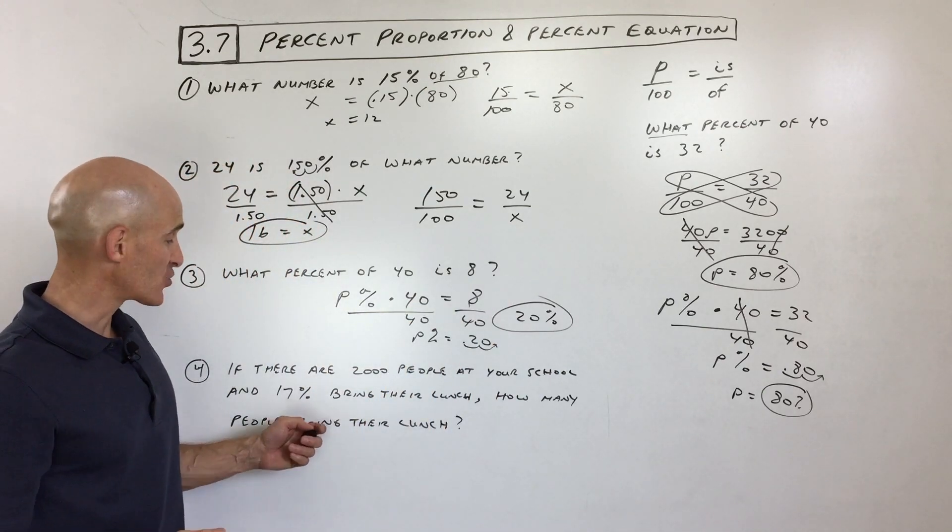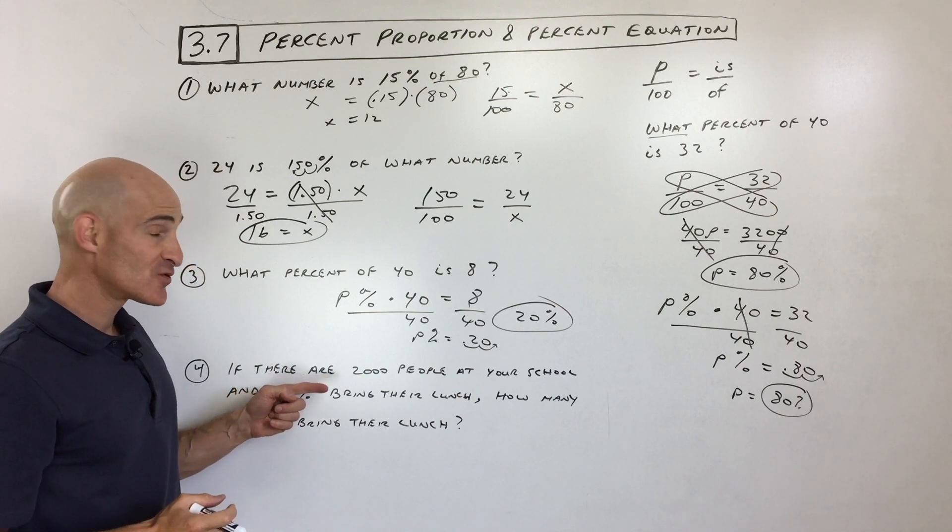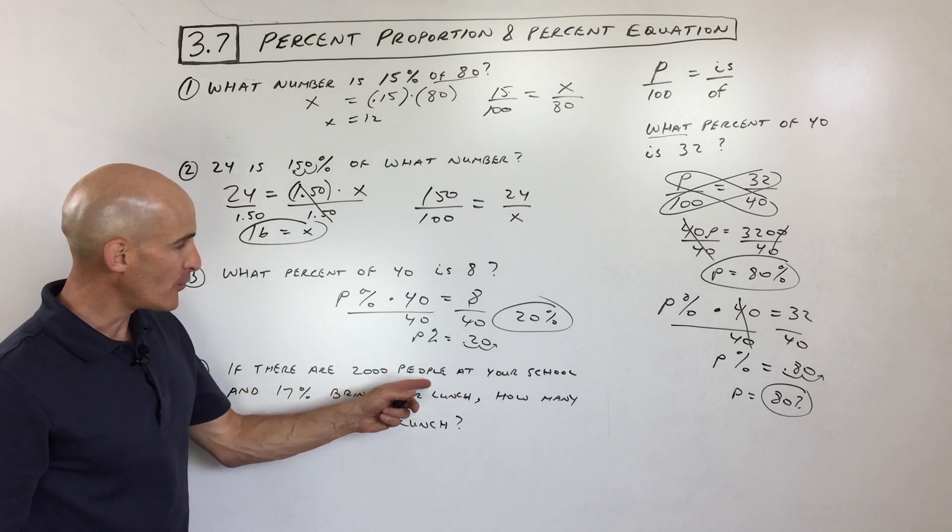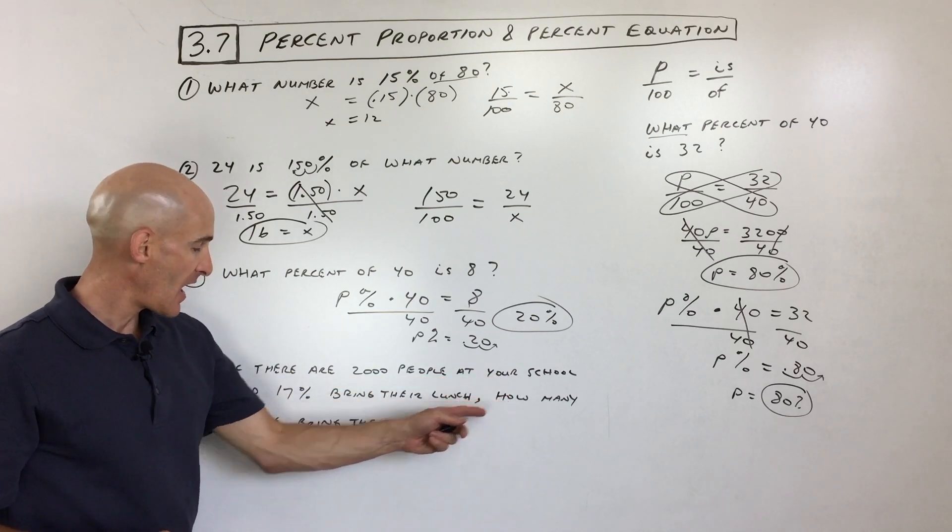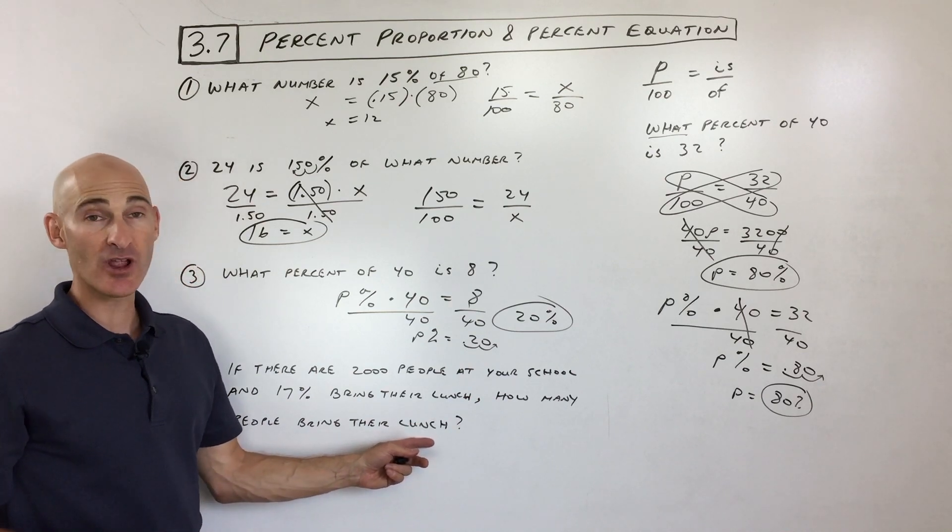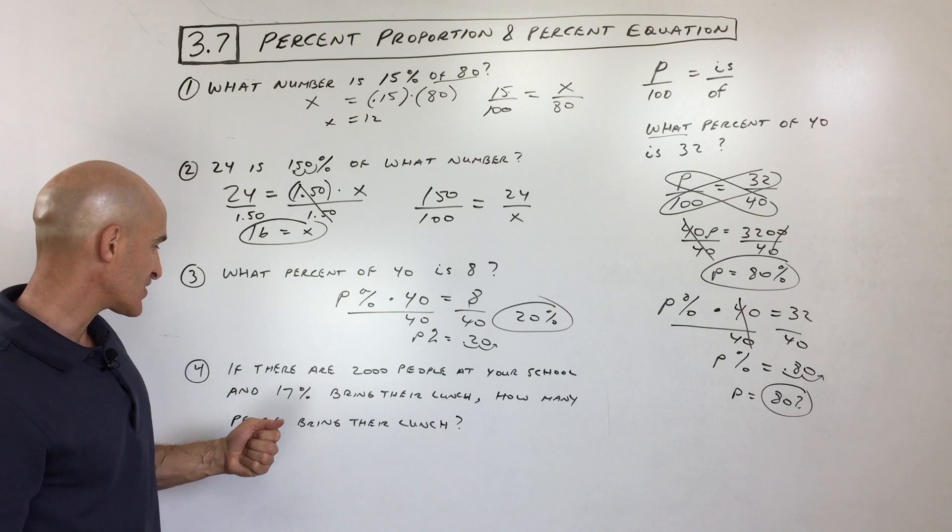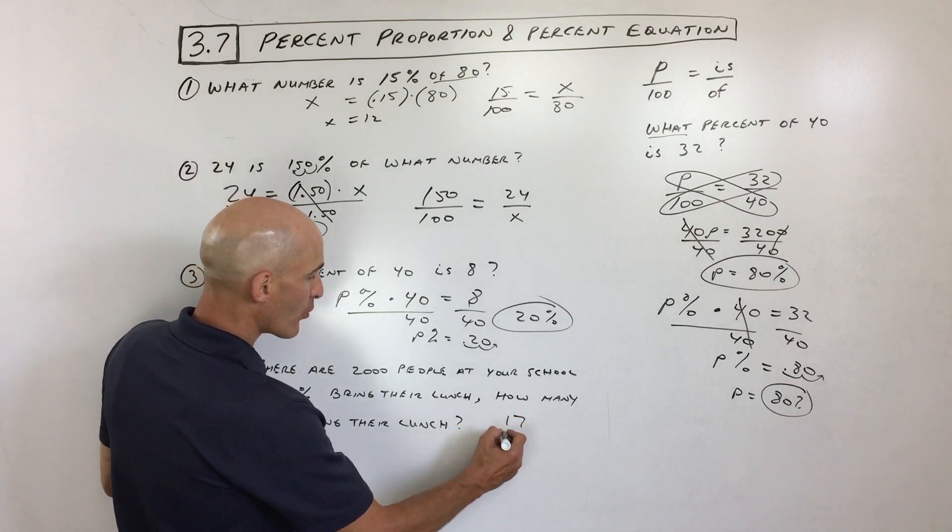Okay, last question in this section, a story problem, of course, right? Want to get good at these story problems. It makes a difference between B and A, right? Okay, if there are 2,000 people at your school and 17% bring their lunch, how many people bring their lunch? Okay, so I like to read it really quick. Then I like to kind of analyze it. So there's 2,000 people, 17% bring their lunch. So let's do a proportion.